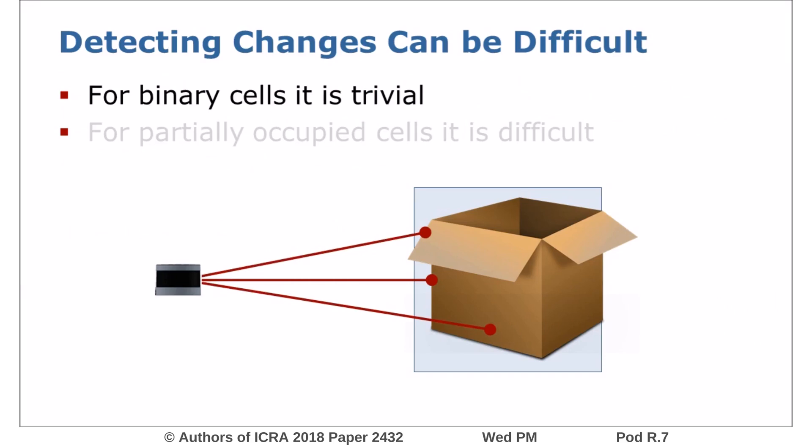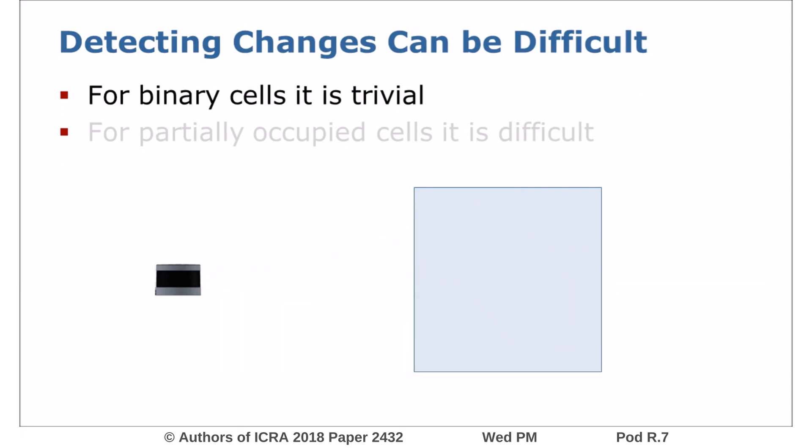If cells are either completely occupied or completely free, detecting a change in the binary state is trivial. If the laser reports a miss after a series of hits or vice versa, the state must have changed.